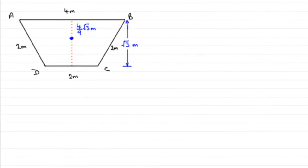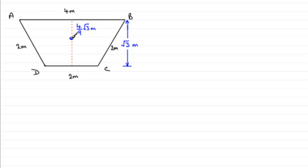We're told that the lamina is now freely suspended from point D and it hangs in equilibrium, and we've got to find the angle between DC and the vertical through D. If you hang any lamina from a given point, the center of mass — which we found in the previous part was a distance of 4/9 root 3 meters from edge AB — always aligns itself underneath the point where you are hanging it from.